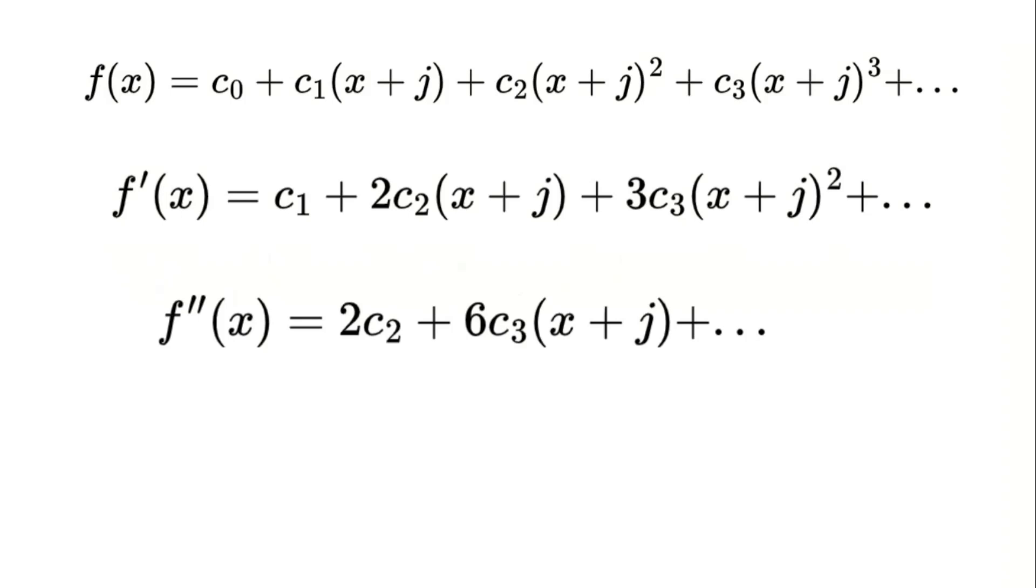To derive the virtual Taylor series, we center it around the virtual number j. In the virtual number system, j is a special unit with the property that adding j to itself results in zero. This is derived from j being defined as the logarithm of negative 1. By substituting j into the original function and its derivatives, we construct the series.